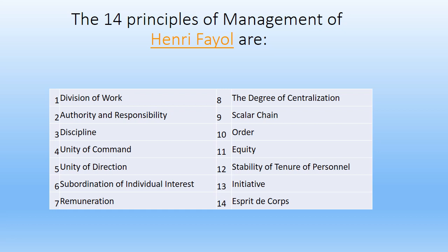Now we have Scalar Chain. There must be a chain of authority and communication in an organization that flows from the top level to the lowest level. This means that subordinates report to their immediate bosses, that is supervisors, who then report to their managers. It helps in giving orders and requesting something, and also reduces chaos and delays in operations.